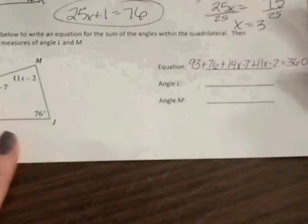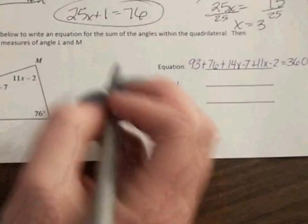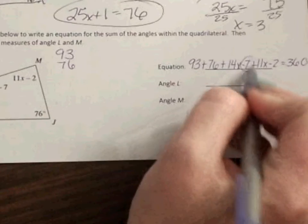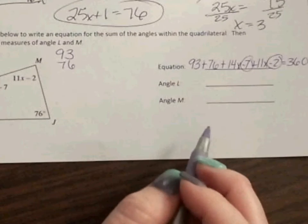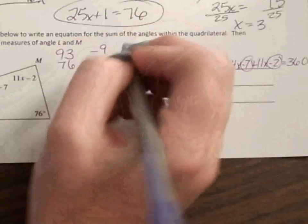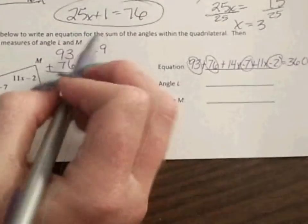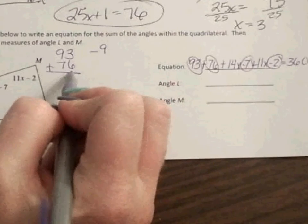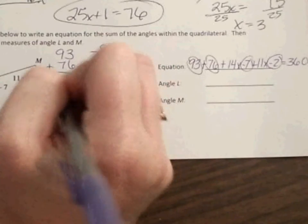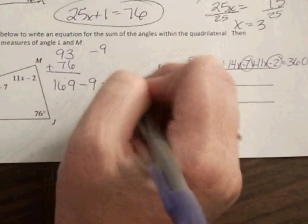So what I'm going to do, I'm going to put all my numbers together first. So I have my 93. I have my 76. I have a negative 7 and a negative 2. So if I add negative 7 and a negative 2, I get a negative 9. So I'm going to put that over there because in a minute, I'm going to have to combine it with these. So I have 93 plus 76. That's 169. And then I'm going to take away the 9 from the negatives, which leaves me with 160.